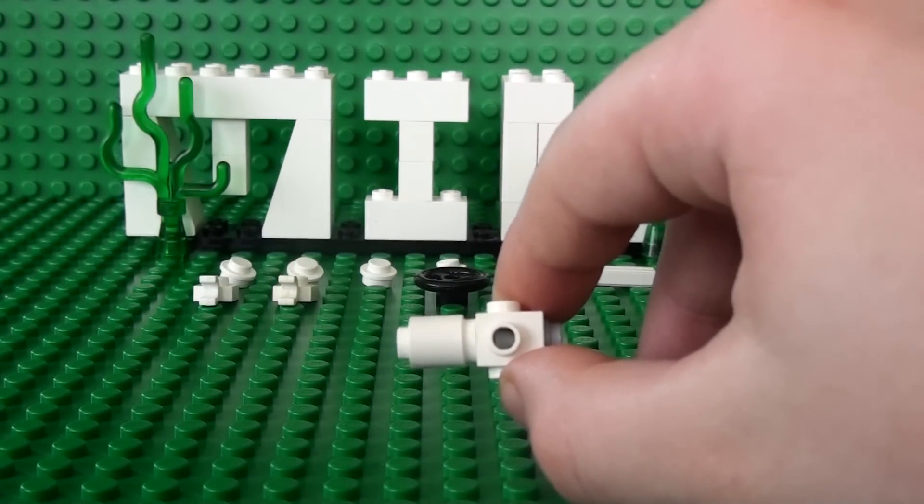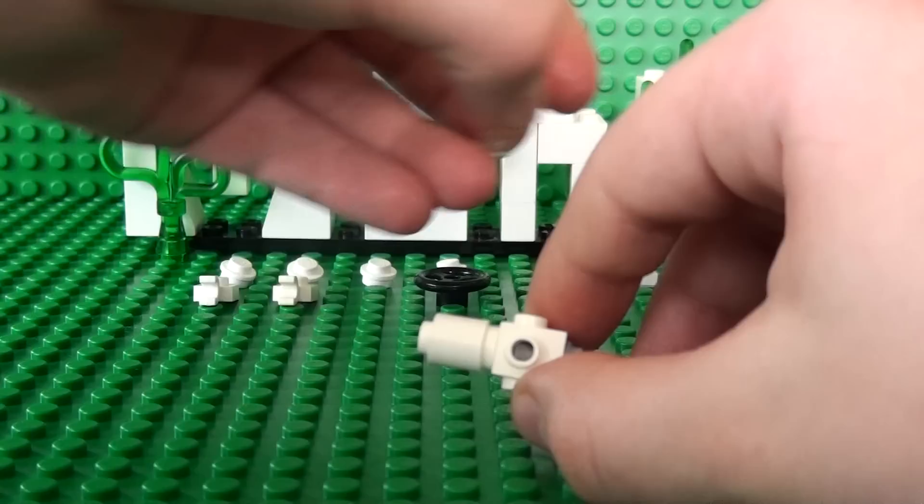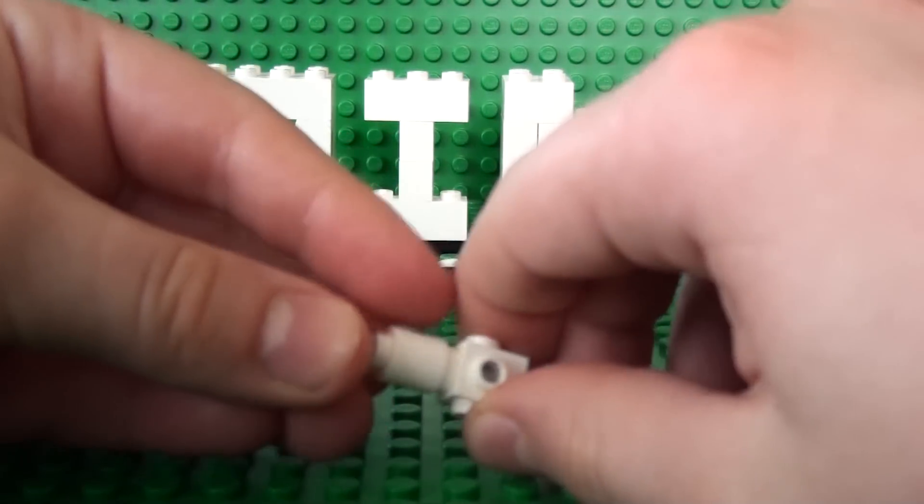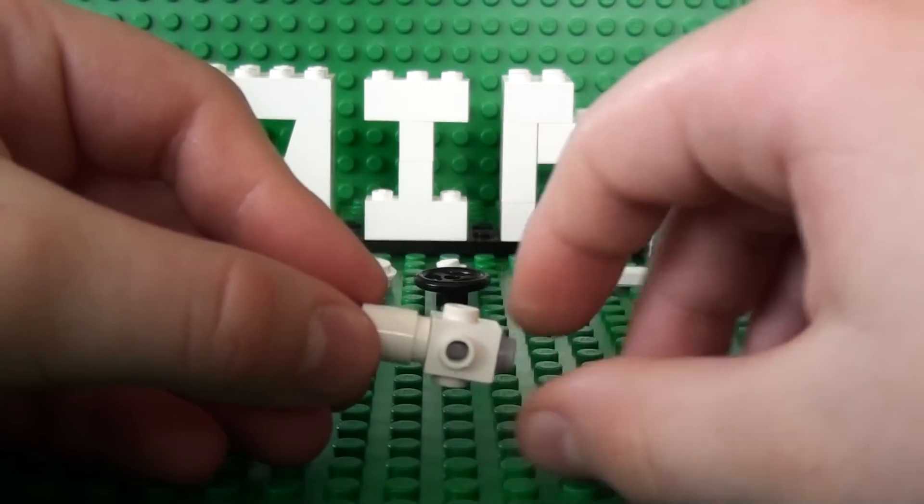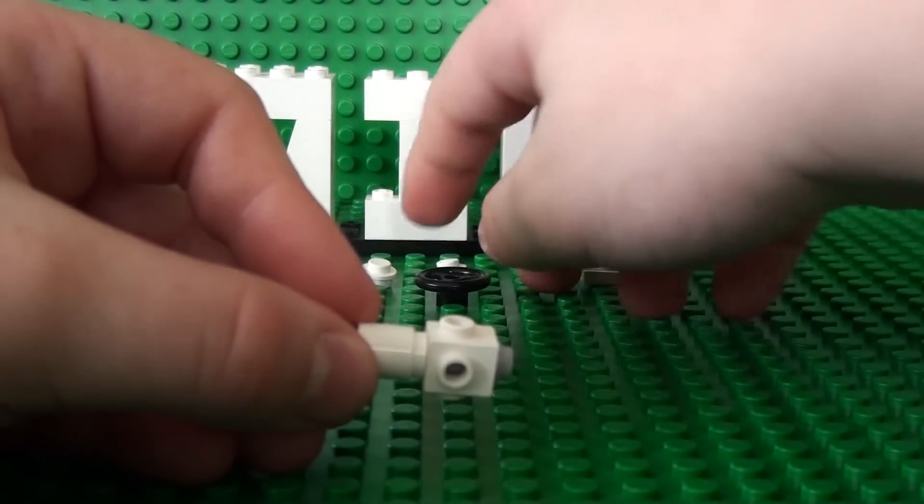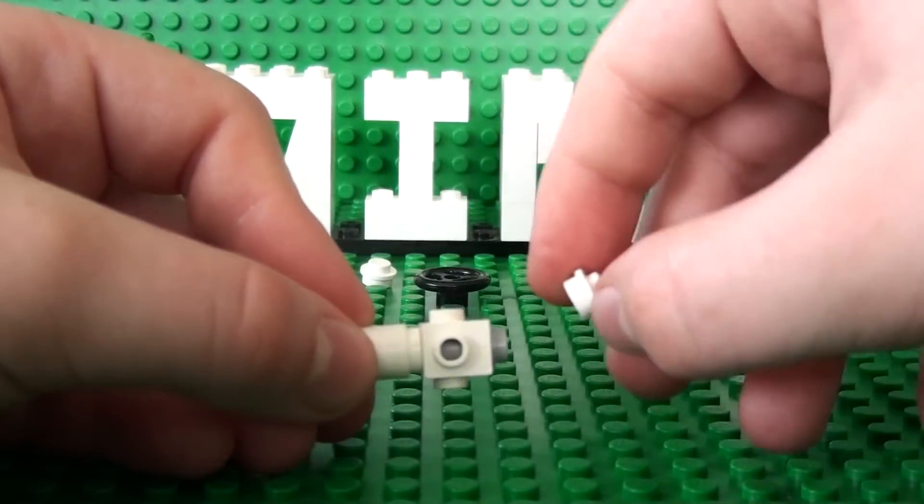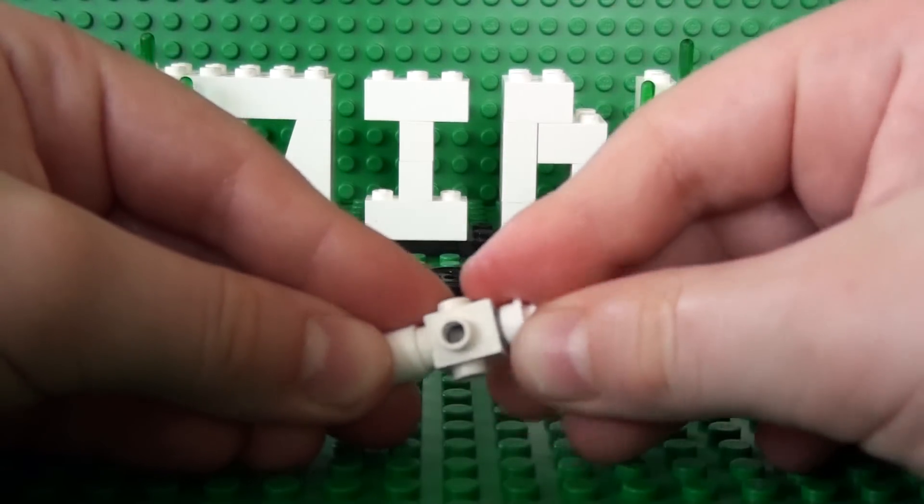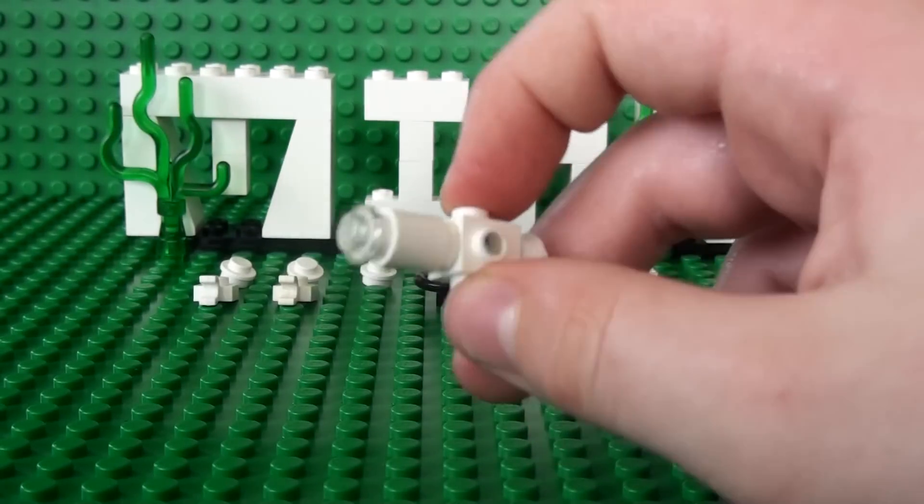Now you take the transparent stud and place that here. And place the other stud at the back. It should now look like this.